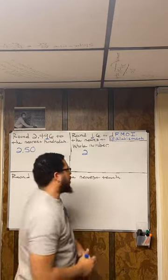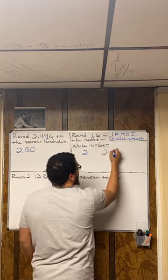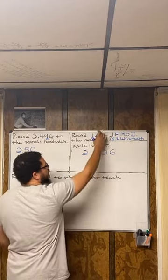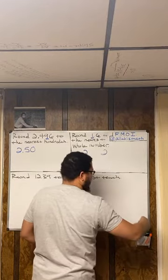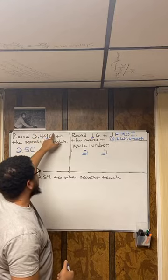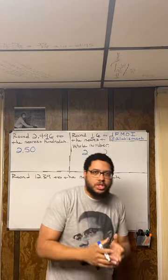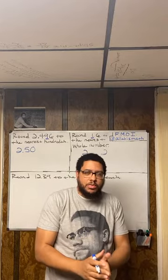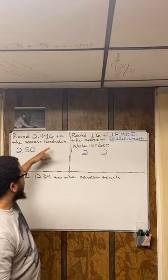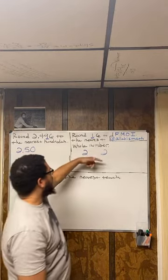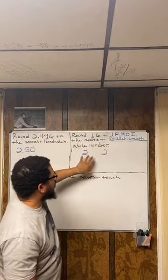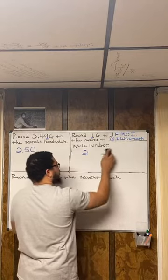Here's a common mistake: students might say the answer is 2.6. No — you're rounding to the nearest whole number, and 2.6 is not a whole number; it has a decimal. The whole purpose is to get rid of the six. You want a number that stops at the ones place. So the answer is just 2.